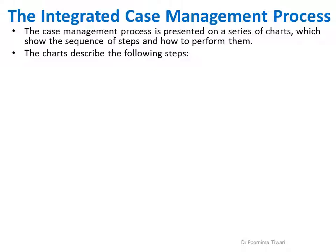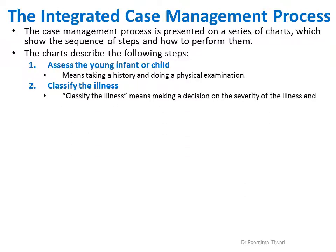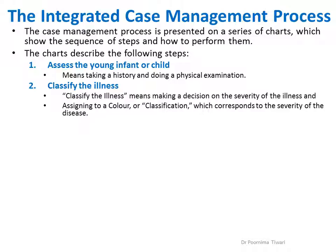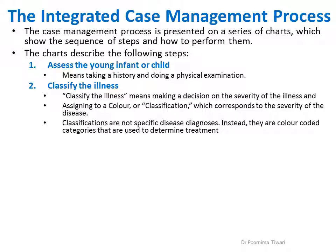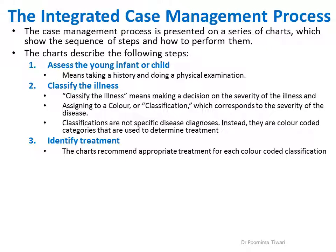These charts describe the following steps: First, how to assess the young infant or sick child — which means taking a history and doing a physical examination. After assessment, classify the illness — meaning decide on the severity and assign a color classification corresponding to that severity. Classification is not a specific diagnosis; instead, color-coded categories determine the treatment for that category. After classifying, identify the treatment for that category, as the charts recommend appropriate treatment for each color-coded classification.